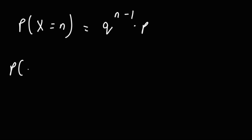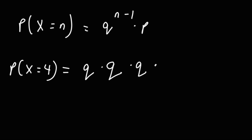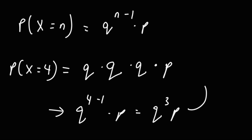So if we were looking for the probability that the fourth event will be successful, the probability that the first event will fail is Q, the probability that the third event will fail is Q, and then the probability that the fourth event will succeed is P. When you plug in 4 for n, you get Q raised to the 4 minus 1 times P, which is Q to the third times P.